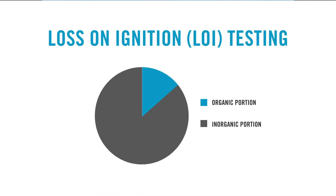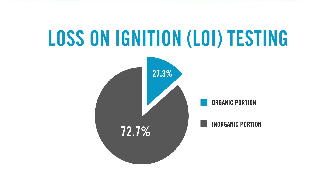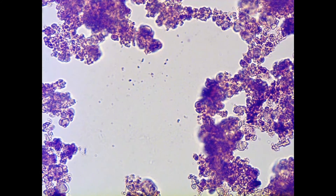When we ran our loss on ignition testing, we found that 72.7% of the foulant was inorganic in content. That means that the bulk of the foulant is inorganic. The client thought that they had a biological fouling issue, and that's what they geared their maintenance procedures towards. So now let's take a look under the microscope and see what biological material we can find. During the analysis we saw mainly particles, which we associate with inorganics.